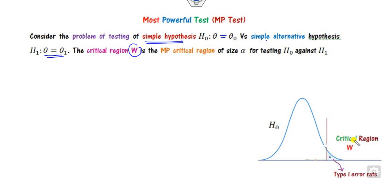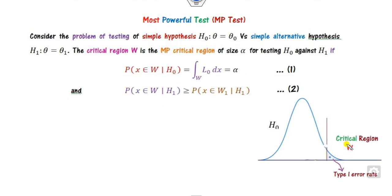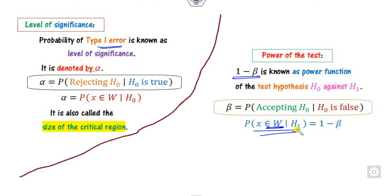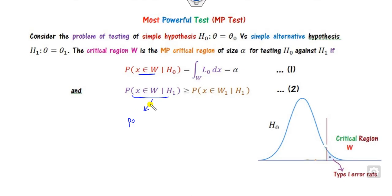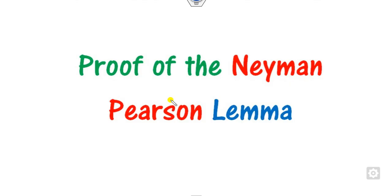The critical region W is called the most powerful test of level of significance alpha whenever the probability that X belongs to W given H0 is true equals alpha, and the probability that X belongs to W given H1 is true — which is the power of the test (1 minus beta) — is greater than or equal to that of any other critical region W1 satisfying the same size condition.